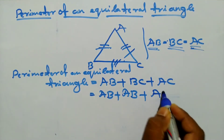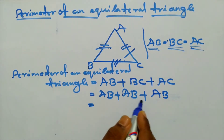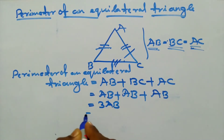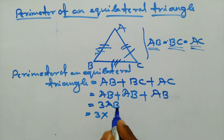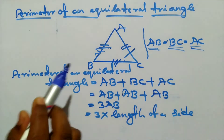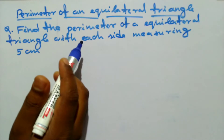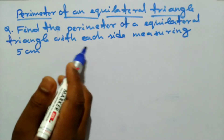So we get AB plus AB plus AB, which equals 3 × AB. The perimeter of an equilateral triangle formula is 3 × the length of one side. Now let's solve a question: find the perimeter of an equilateral triangle with each side measuring 5 centimeters.